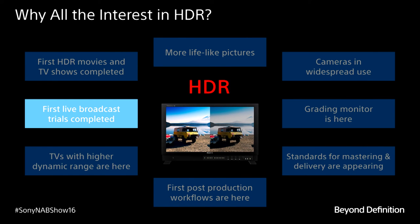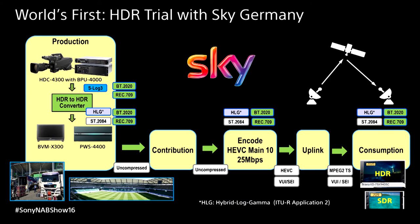We have workflows, displays, and professional tools, and now we have begun testing in live production. Last year we partnered with Sky Germany to cover the finals of the European football cup in Germany. All of our studio cameras were recording S-Log3, and we converted S-Log3 to PQ and HLG for transmission over satellite at 25 megabits using HEVC — high efficiency video coding. We had receivers in multiple cities and were testing our TV sets to evaluate the quality of PQ and HLG.